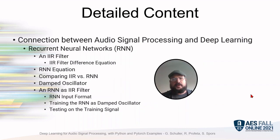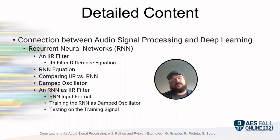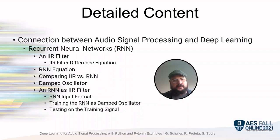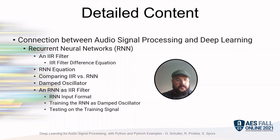The last topic of our tutorial is recurrent neural networks and their relation to an IIR filter — an infinite impulse response filter. We will talk about the IIR filter, its difference equation, the equation of a recurrent neural network, and compare the IIR with the recurrent neural network.